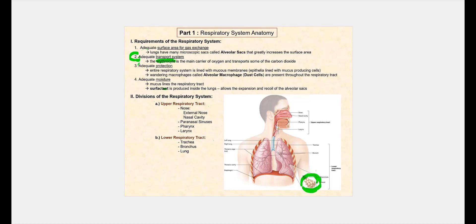The third requirement is adequate protection. Our lung is a very delicate tissue, so one way to protect it is to line it with mucous membranes. The mucosa, the most superficial part of the mucous membrane, consists of epithelial tissue. Among those epithelial tissue will be goblet cells, and of course these goblet cells are what produces the mucus.